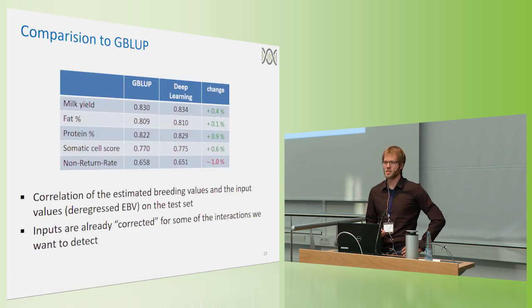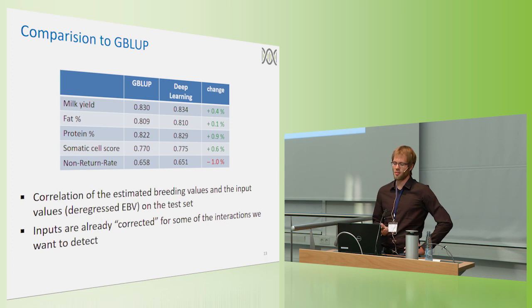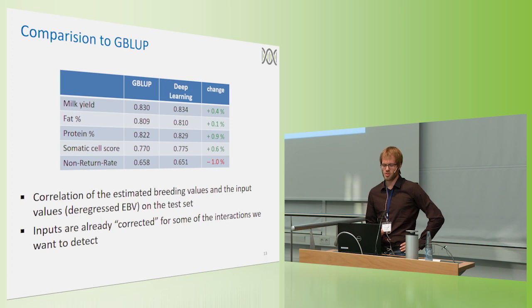When looking at prediction results, we compared the correlation of the estimated breeding values with our inputs, so the deregressed breeding values, to common methods used in genetics, so GBLUP. And over all traits, results were quite similar. It's really not earth-shattering, but at least on the same level to a bit better for most traits.